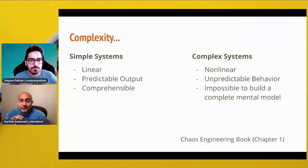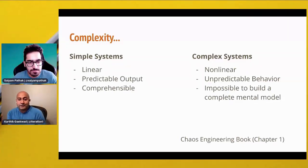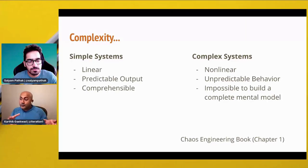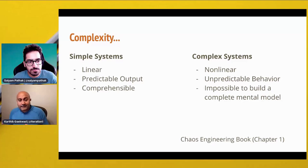Versus more complex systems — everything doesn't really happen in a linear fashion. Things are nonlinear, you have a lot of unpredictable behavior, and it's also impossible to build one complete mental model. One of the really interesting things is that in the past, 10-15 years ago, you'd have one architect that was able to understand the whole system. So when something went wrong, you could go to that one person and ask what's going on. But in today's world, when everything's more distributed, it's hard for one single person to have a complete mental model of the entire system. It's become a lot more complex.